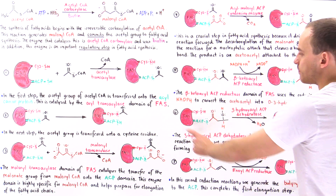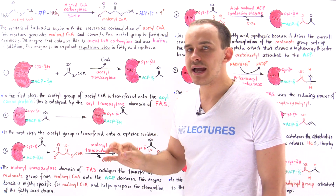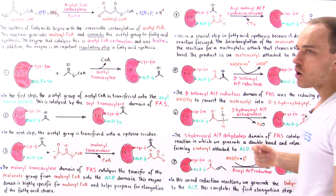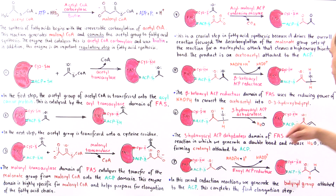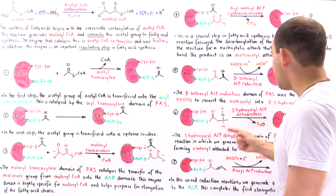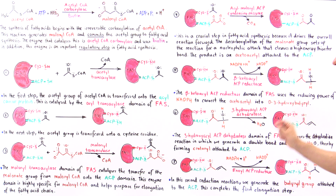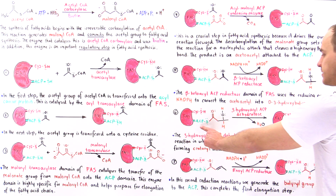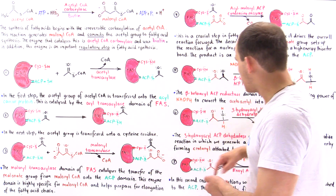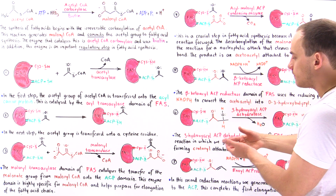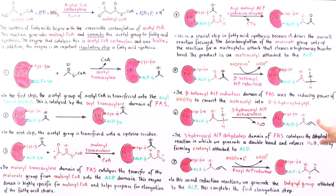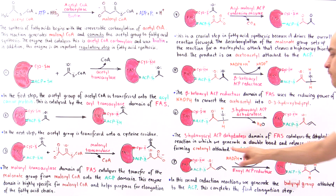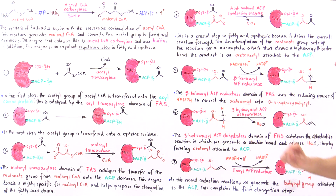In step six, the goal is to remove the hydroxyl group and convert the alcohol into a double bond. The enzyme 3-hydroxyacyl ACP dehydratase — one of the seven catalytic domains of FAS — catalyzes a dehydration reaction in which a hydrogen and the hydroxyl group are removed to form water, generating a double bond and producing the crotonyl-ACP intermediate.